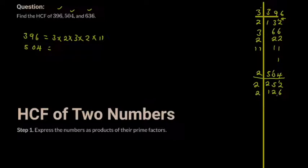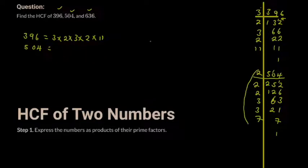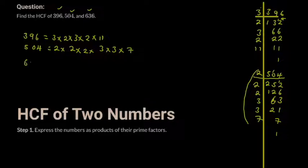Two into 126 gives 63. Now I'll use three: three into 63 gives 21, three into 21 gives 7, and seven into 7 gives 1. Collecting the prime numbers, 504 equals two times two times two times three times three times seven, like this.